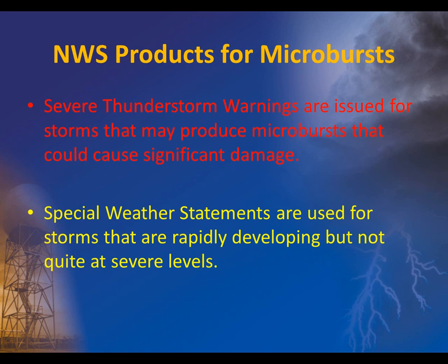The National Weather Service doesn't issue a product specifically for microbursts. However, severe thunderstorm warnings are used for cases when microbursts are expected to cause significant damage. For rapidly developing storms not at severe levels, which may produce weaker downbursts, special weather statements are issued.